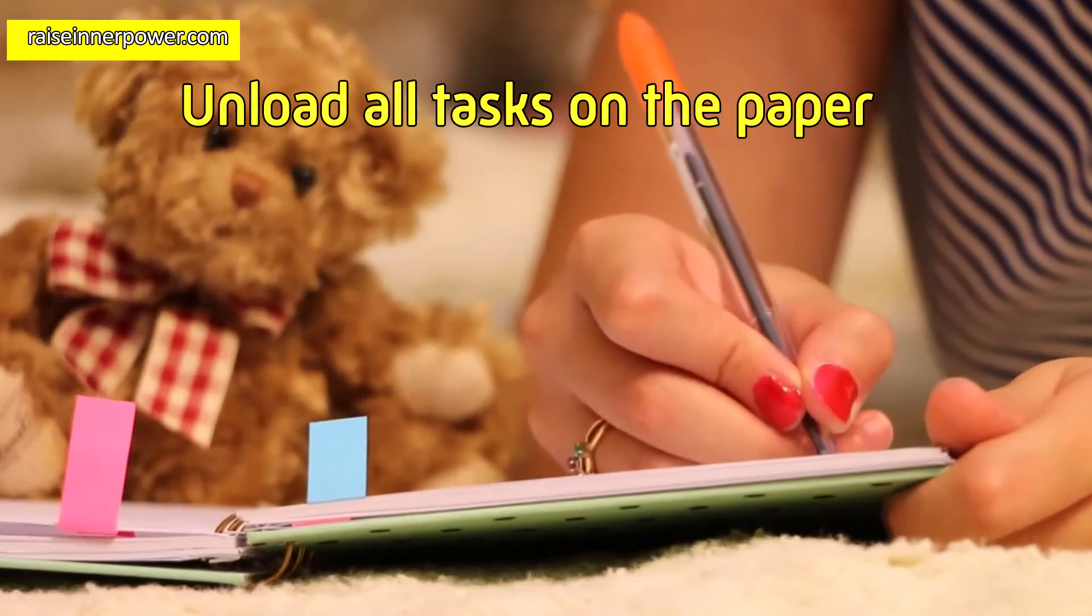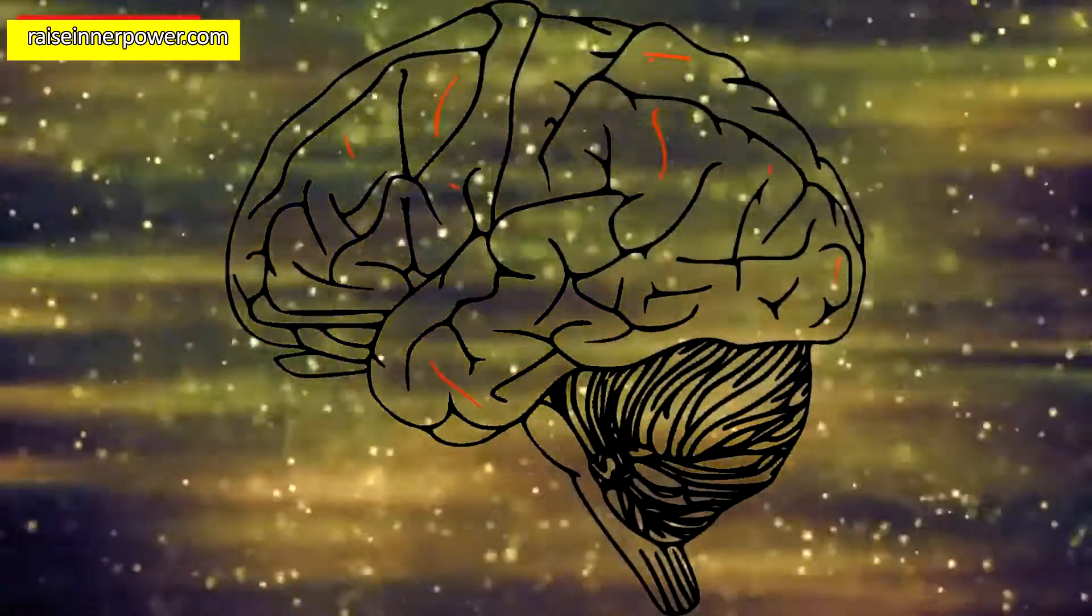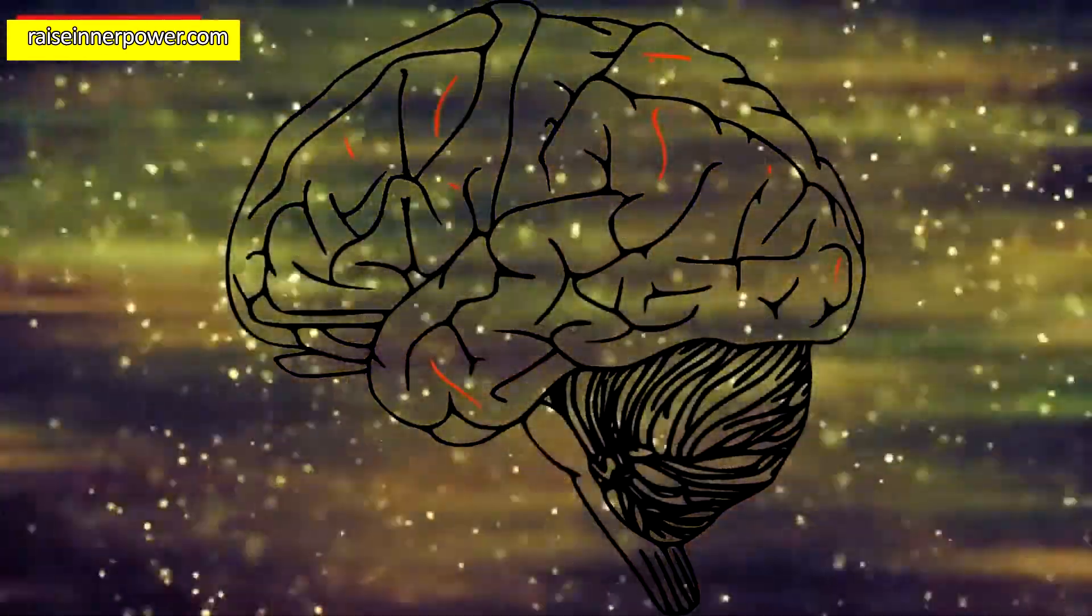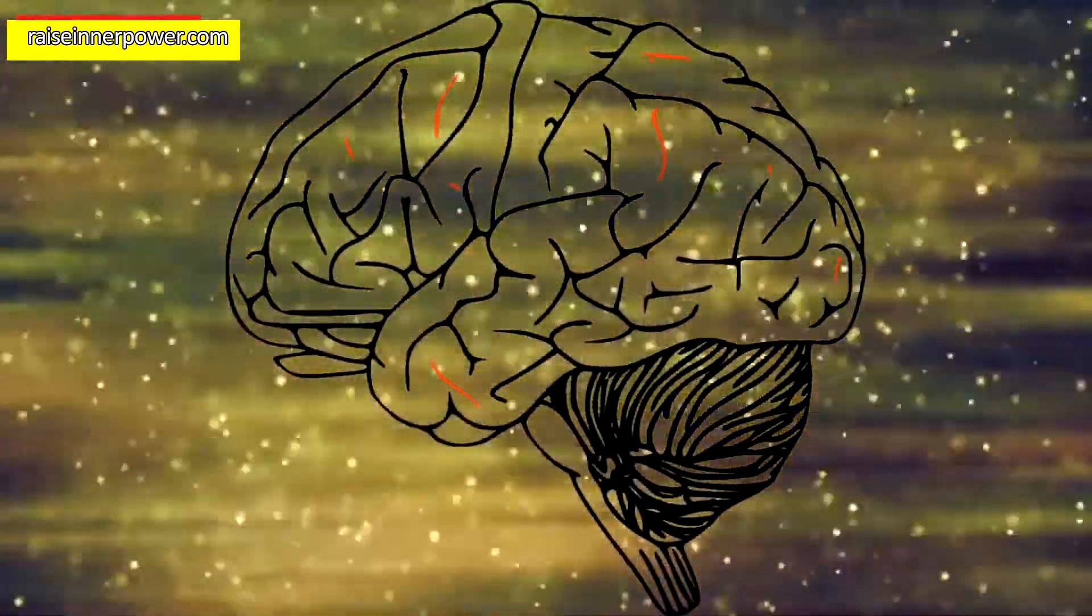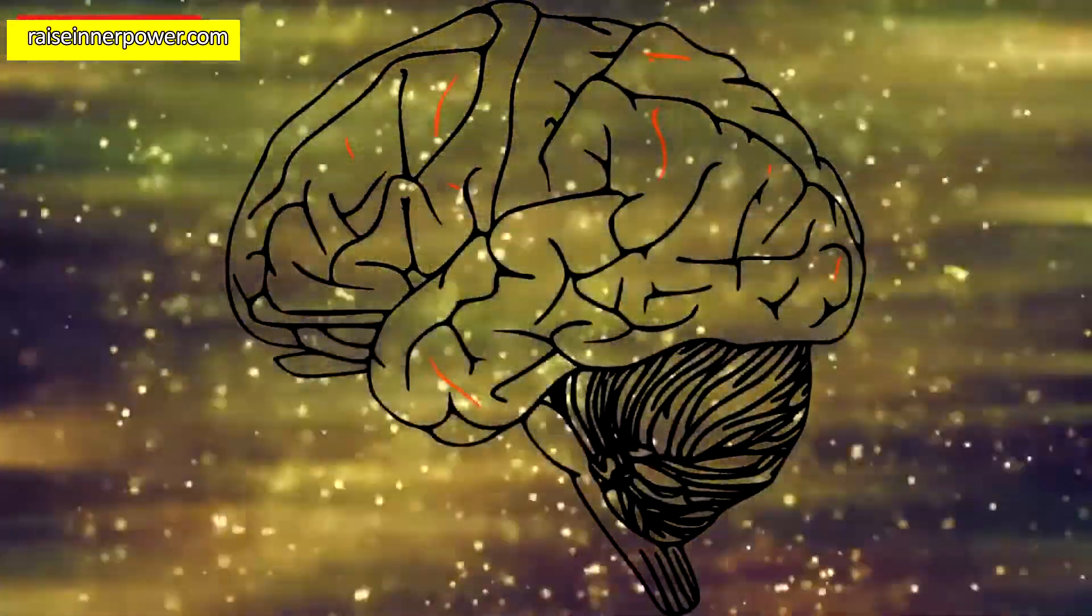Unload all tasks on paper. There are dozens of thoughts in your brain, but it is hard to focus on all at once. Write out all your thoughts on paper. This will stop the chaos in your head and will help increase brain power and concentration.